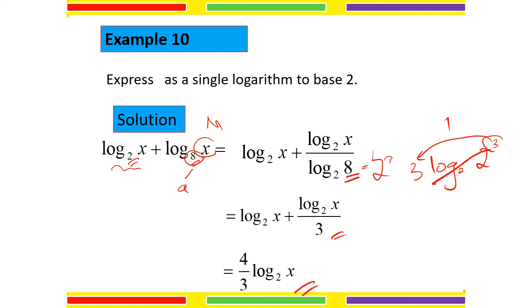The final answer uses 1 plus 1 over 3 equals 4 over 3. Good luck everyone for chapter 1 — please conquer it and study smart. Thank you.